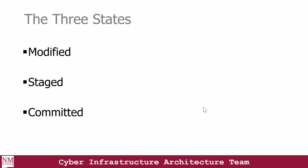We have three most important states in Git: the modified, the staged, and the committed. The modified state means that you have changed the file but have not committed it yet to your database. The staged state means that you have marked a modified file in its current version to go into your next commit snapshot. And the committed state means that the data is safely stored in your local database.